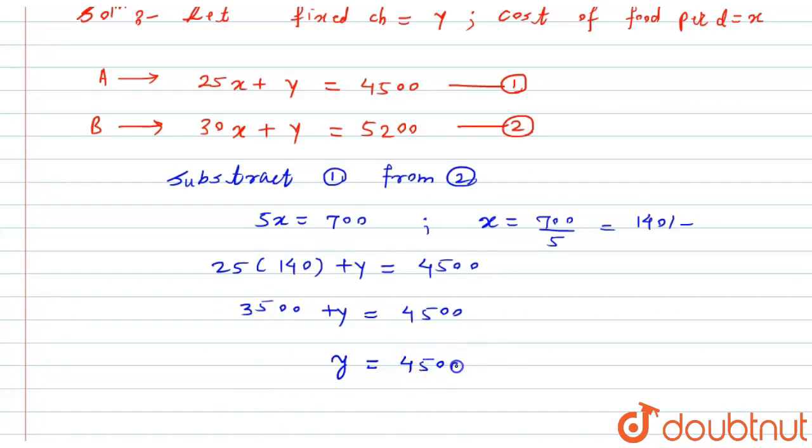So here I will get the value of y which equals 4500 minus 3500, which equals 1000 rupees. And hence here we got the fixed charges, y equals 1000, and the cost for food per day is 140 rupees.